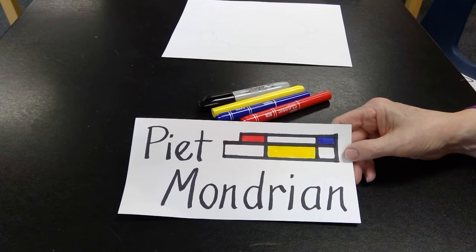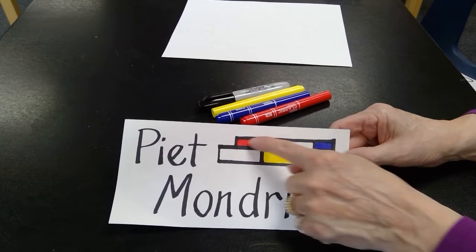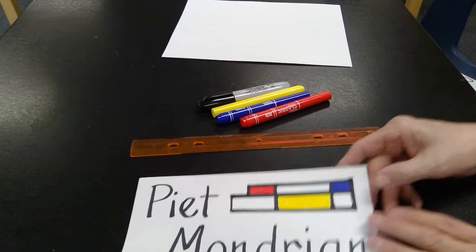Today we're going to be learning about Piet Mondrian. He was a Dutch artist from the Netherlands and he liked to create art that was abstract. He liked the three primary colors: yellow, red, and blue, and black and white.